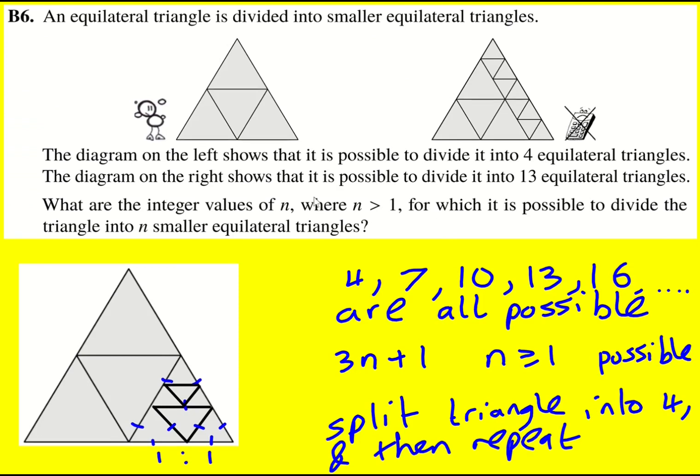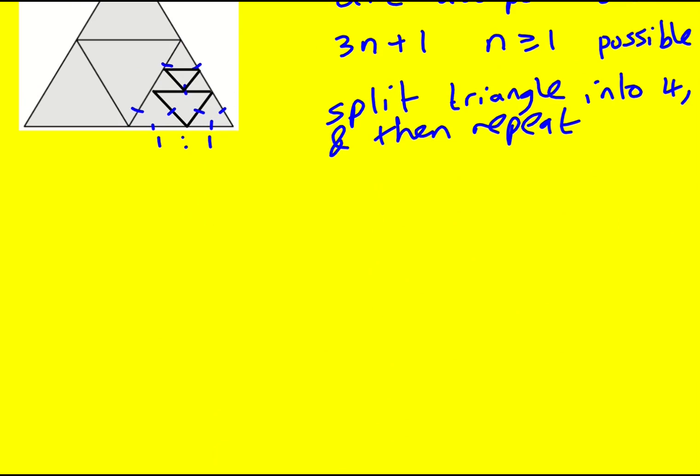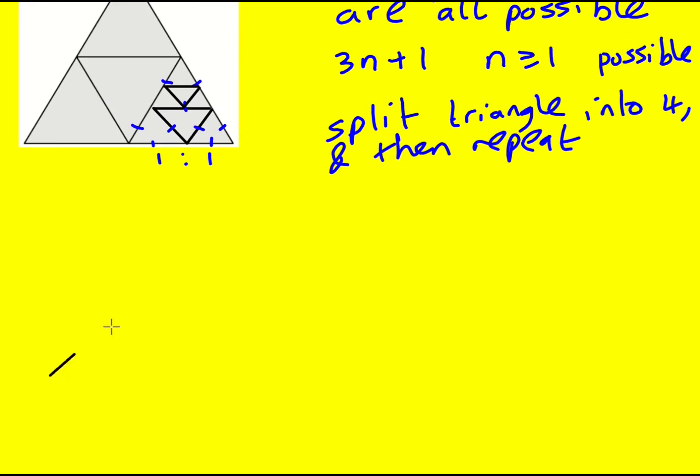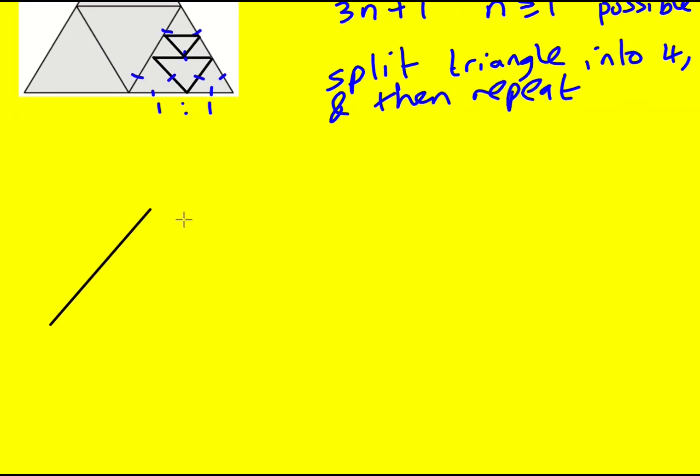All right we're going to take a look now at a different way of splitting the triangle up because that was a good approach but as you can see up here this gave us 13 but with a completely different sort of way of splitting the triangle. So it doesn't feel like it's going to be possible to do two or three. Can we get five or six, that might be something to think about.